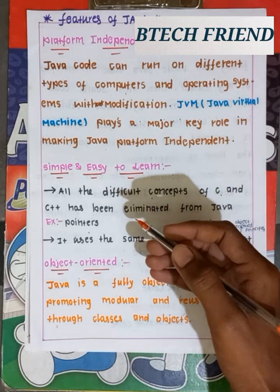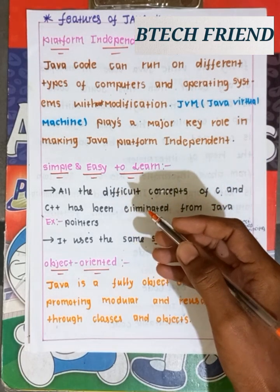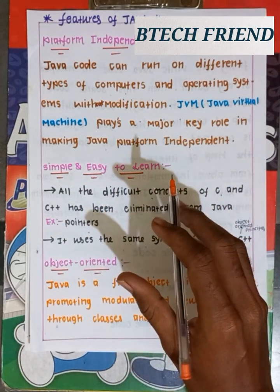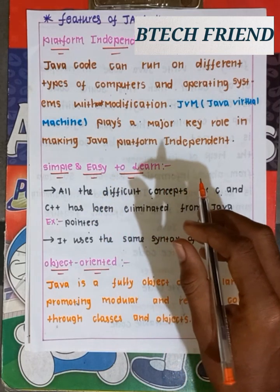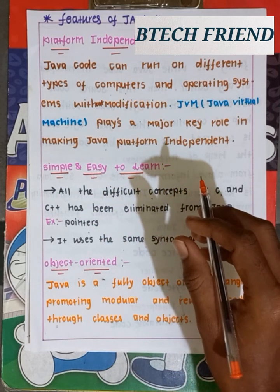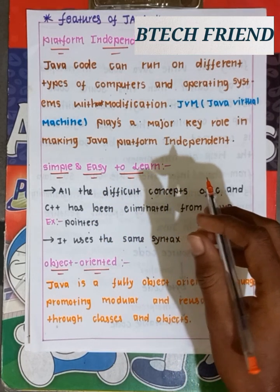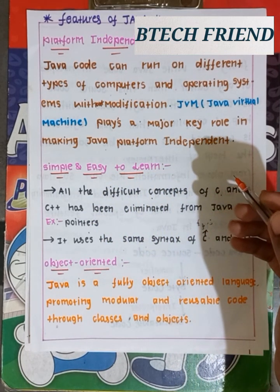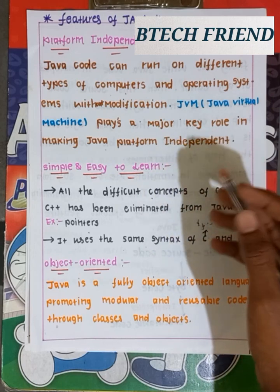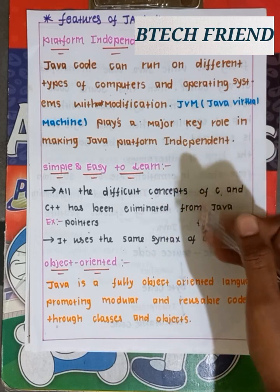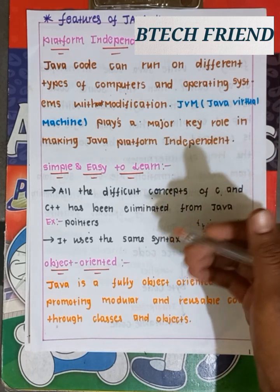If you want to use C++, that is not a fully object oriented language — it is only partially object oriented. Java supports full code reusability through classes and objects.